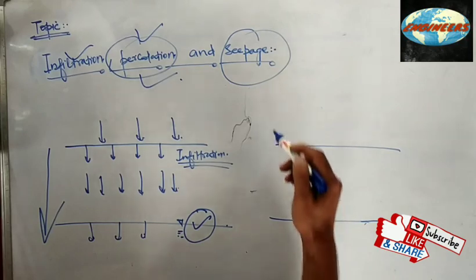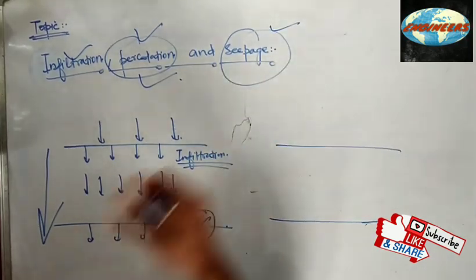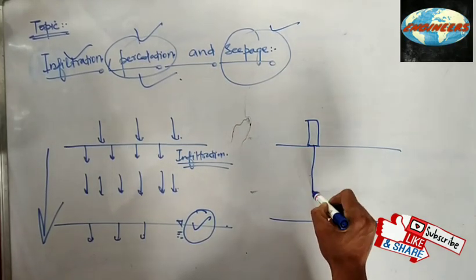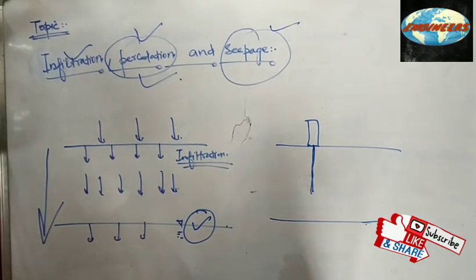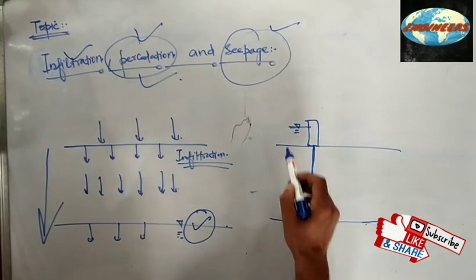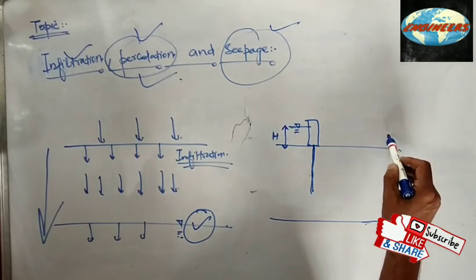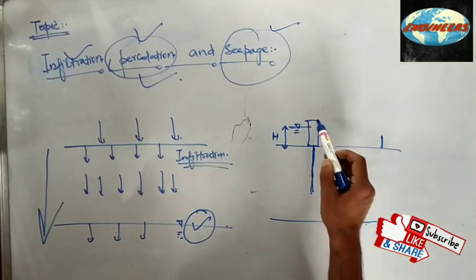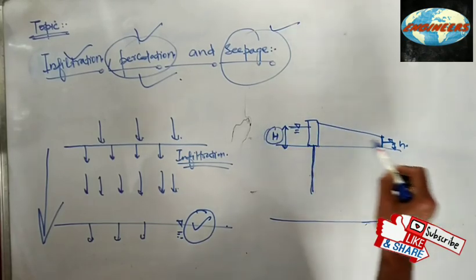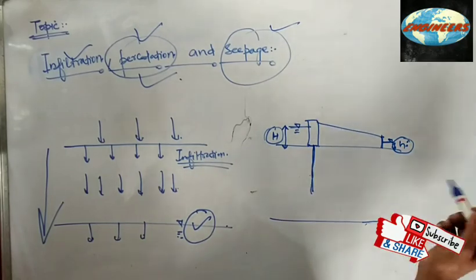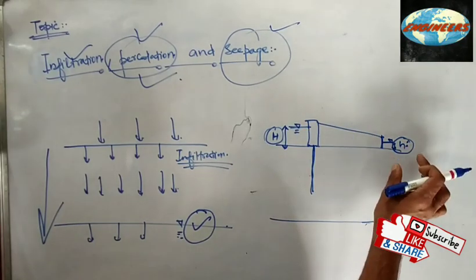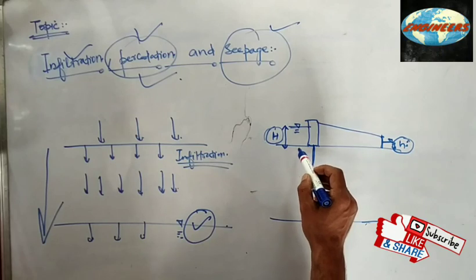Seepage is actually due to pressure difference. For example, if we have a dam with sheet piles to prevent piping and uplift, the height of water on the upstream side is capital H, and at the downstream side it is small h. So we have a pressure head difference of H minus h — a pressure gradient existing between these two sides, and this water will try to seep through.